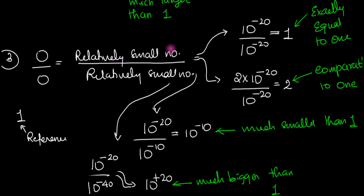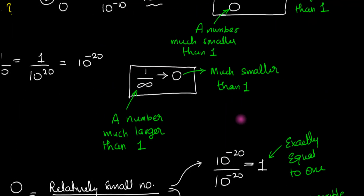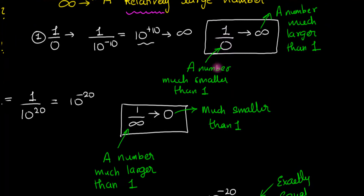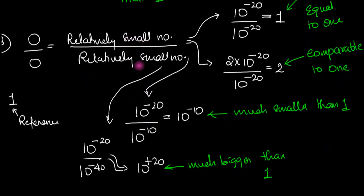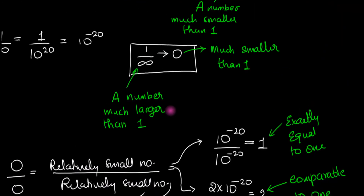You see the problem with 0 divided by 0 — the problem with asking what is the ratio of two relatively small numbers. If you ask what is the ratio of a number and a relatively small number compared to that number, you can give a generic answer. But you can't do the same here. If someone asks what is a small number divided by a small number, you'd say: can you specify what those two numbers are? Because depending on them, the answer can be anything. That's what we mean when we say 0 by 0 is indeterminate — it has no generic answer.